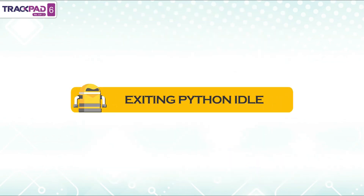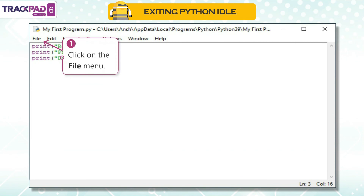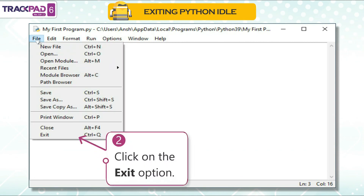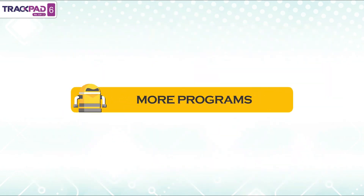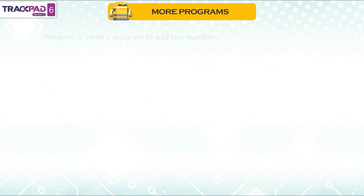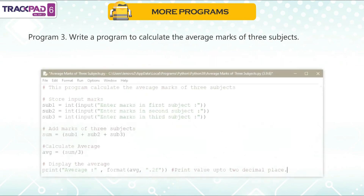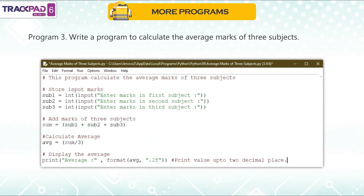Exiting Python IDLE: After finishing writing your program, you can exit Python IDLE by clicking on the File menu and then clicking Exit. Practice programs: Program 1 — write a program to print your name. Program 2 — write a program to add two numbers. Program 3 — write a program to calculate the average marks of three subjects.